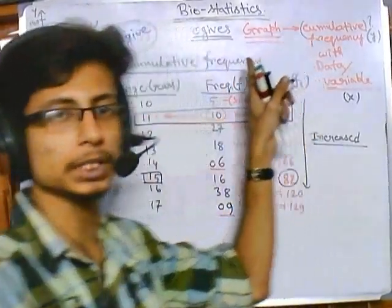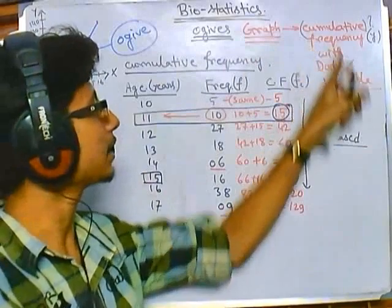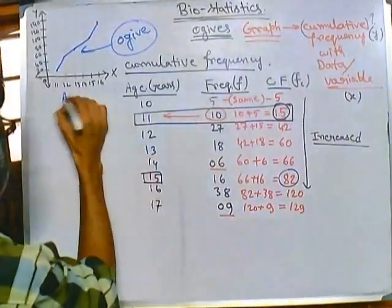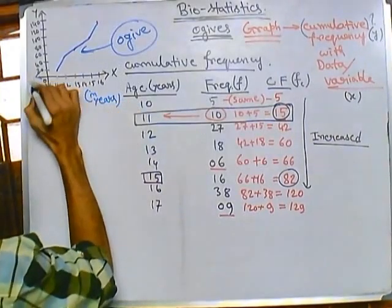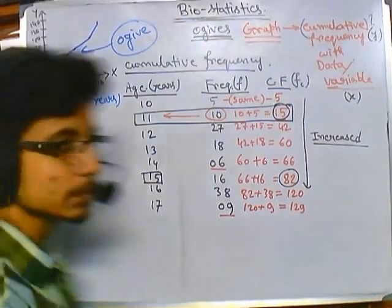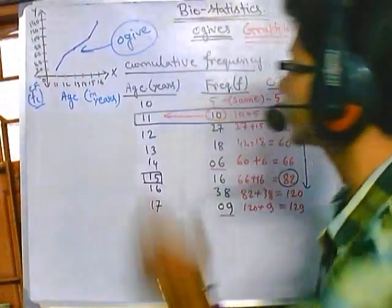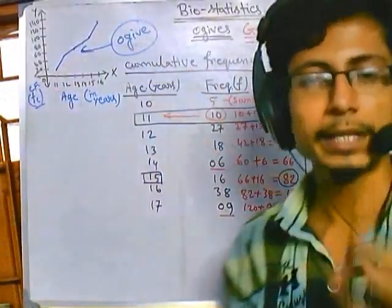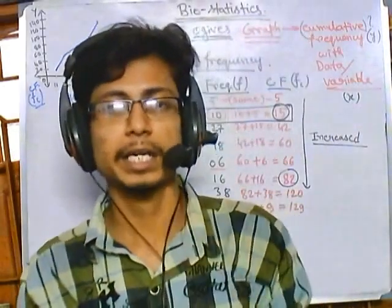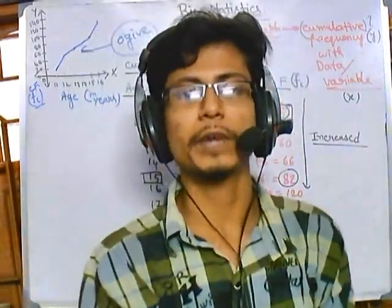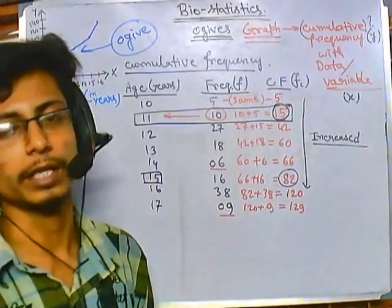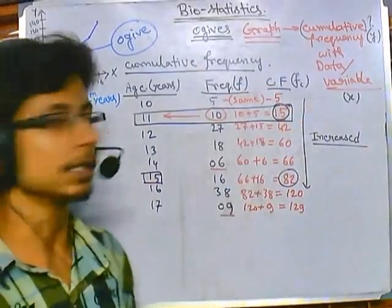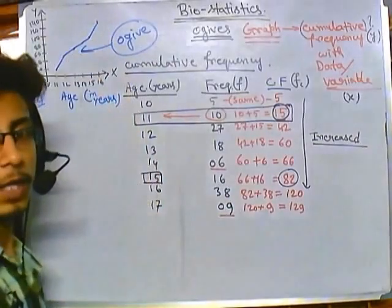So the ogive is a graphical representation of cumulative frequencies on the y-axis and the variable — in this case, age in years — on the x-axis, written as f sub c. Cumulative frequency plays a very important role especially in grouped data analysis; for example, to find the median and mode, cumulative frequency is essential.